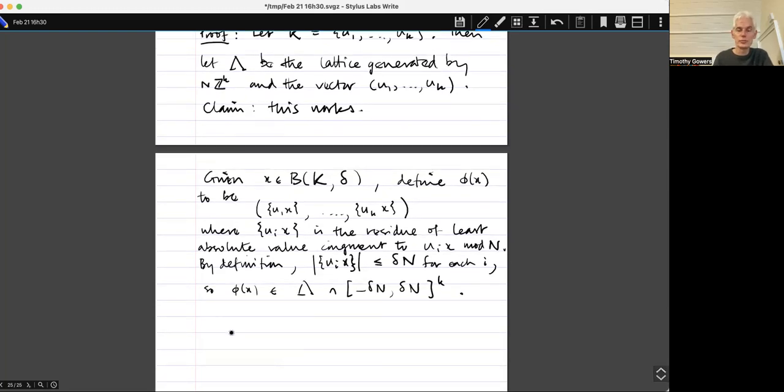Now let's check that Phi is a homomorphism. If X 1 plus X R equals Y 1 plus Y R, then U i X 1, so I'm just picking some arbitrary i there, U i plus U i X R is going to be congruent mod N to U i Y 1 plus plus U i Y R mod N.